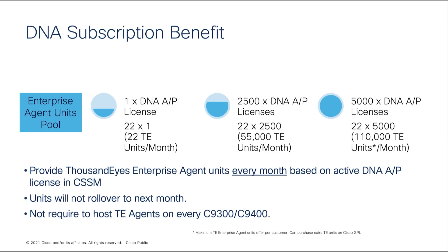Now let's look at the DNA subscription benefit in detail. We are going to provide 22,000 units for any Advantage or Premier license. If a user has 2,500 of 9300 or 9400 switches, they will have 55,000 units in their ThousandEyes account. If a user has 5,000 of 9300 or 9400 switches, they will have 110,000 units. This is the maximum number of units we provide to our customers.